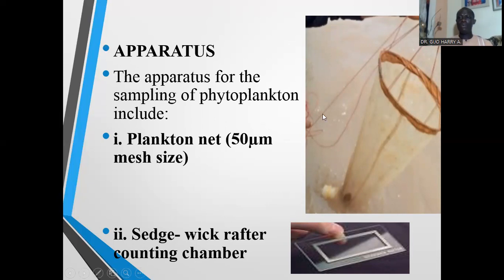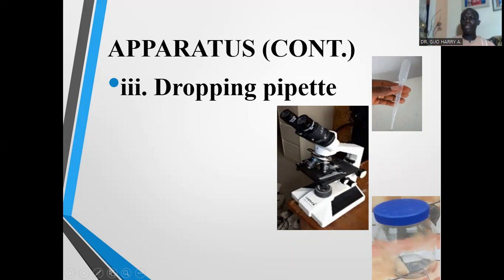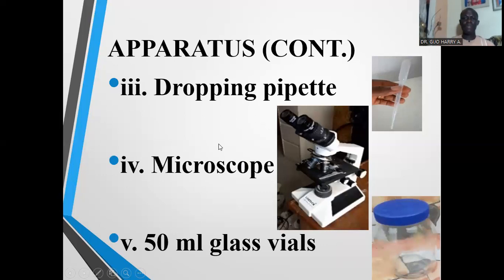The plankton net consists of a rope, a rim, the net itself, and a bottle at the bottom — it is used for the collection of phytoplankton as well as zooplankton. The Sedgwick-Rafter counting chamber is used instead of a microscope slide to view the planktons. We also need dropper pipettes to collect subsamples to place on the Sedgwick-Rafter counting chamber, a microscope for viewing, and 50 ml glass vials for storing samples.